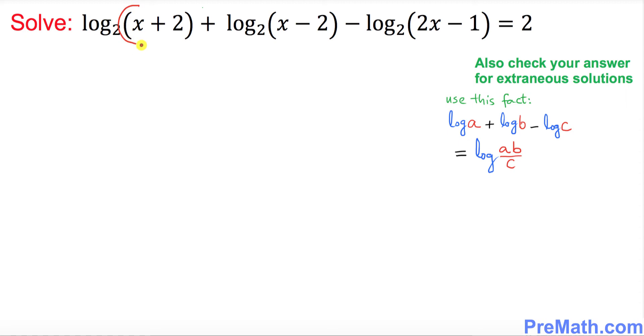Let's call this part A, this is our B, and this is our C. Then how we're going to compress this problem. So our problem is going to look like log of A, which is X plus 2, times B, which is X minus 2, and since this is a minus means divided by, this is going to be at the bottom, 2X minus 1.